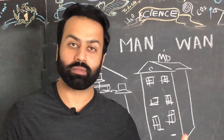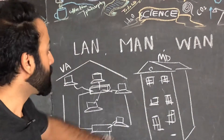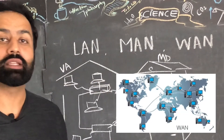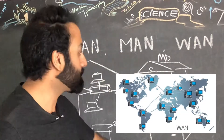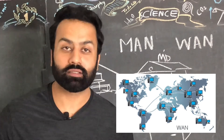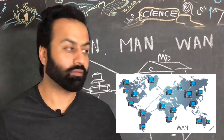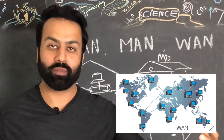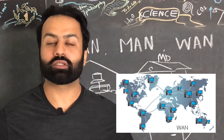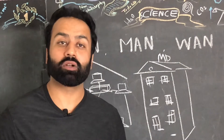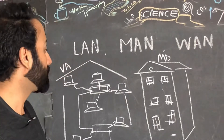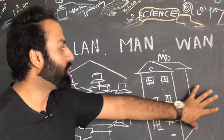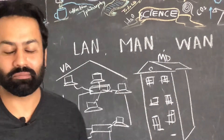WAN stands for Wide Area Network — it is bigger. If we connect country to country, for example Afghanistan to India, India to America, America to some other places, that is called a Wide Area Network.